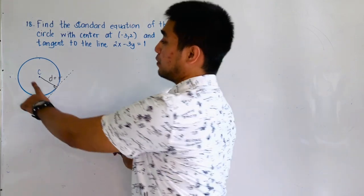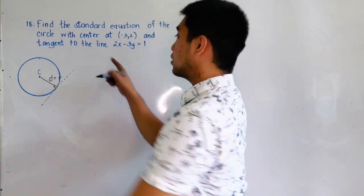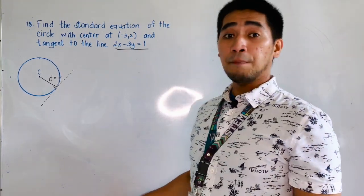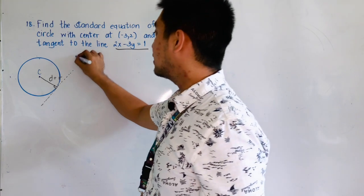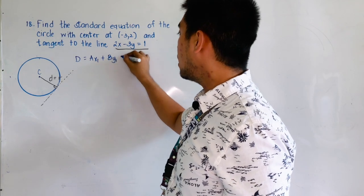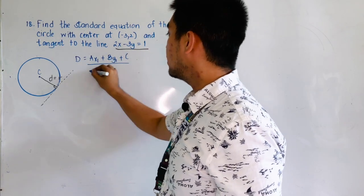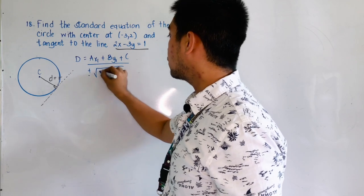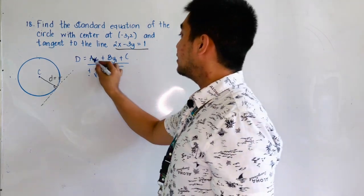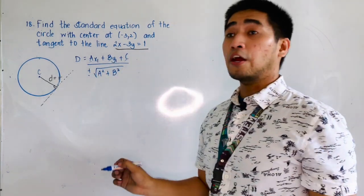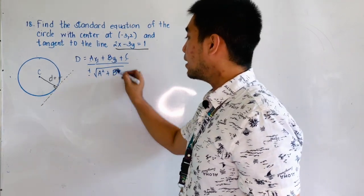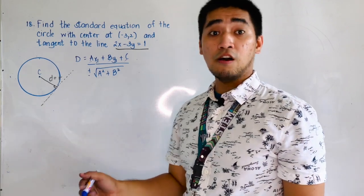If we are given a center and an equation of the tangent line, all we have to do is remember our formula: d is equal to ax₁ plus by₁ plus c, all over the positive or negative square root of a squared plus b squared. Here, a, b, and c are the coefficients of the equation of the line, while x₁ and y₁ are the coordinates of our center.